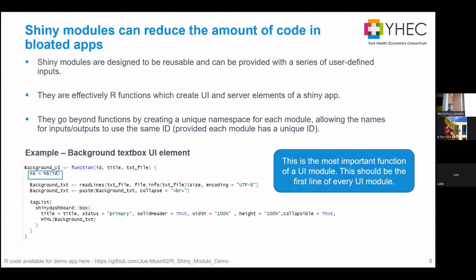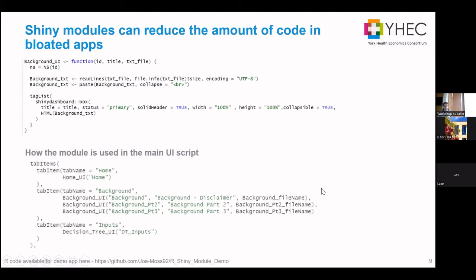The big thing to note — and I'll come back to this — is that the first line of every UI module must contain the namespace function. If we look at how you then use that module within your Shiny app, the module is called just like a function from within the main script. Each time I've called it, I've given it a unique ID: background, background part two, background part three. That's how you distinguish between each of the modules every time you call it.